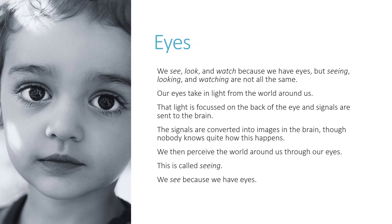We see, look, and watch because we have eyes. But seeing, looking, and watching are not all the same. Our eyes take in light from the world around us. That light is focused on the back of the eye and signals are sent to the brain. The signals are converted into images in the brain, though nobody knows quite how this happens. We then perceive the world around us through our eyes. This is called seeing.